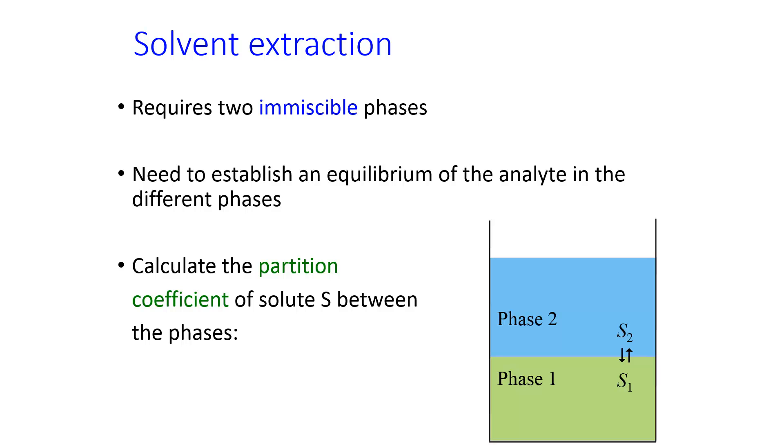And numerically, this is represented by this thing called the partition coefficient, which is yet another K. And this is the ratio of the activities of the analyte in your two phases. We normally just approximate this as the concentrations. Those concentrations follow directly from the difference in solubility of your analyte between phase 1 and phase 2.